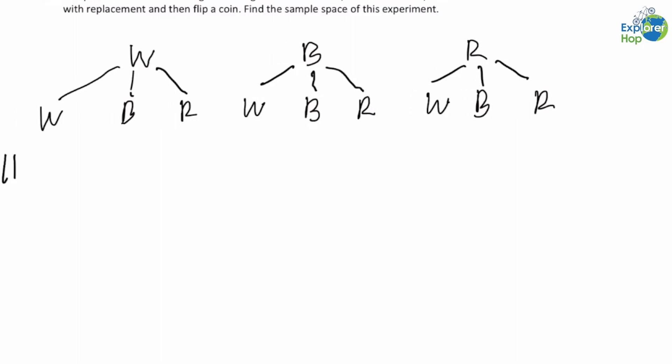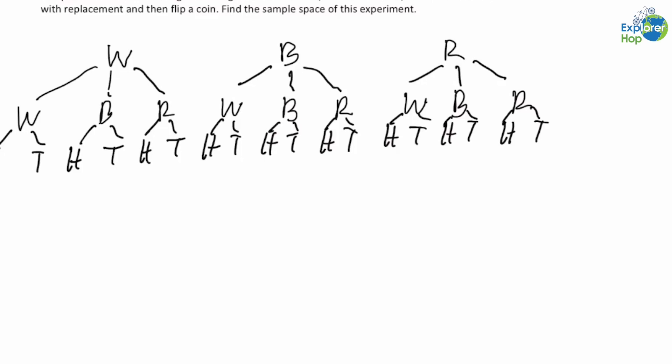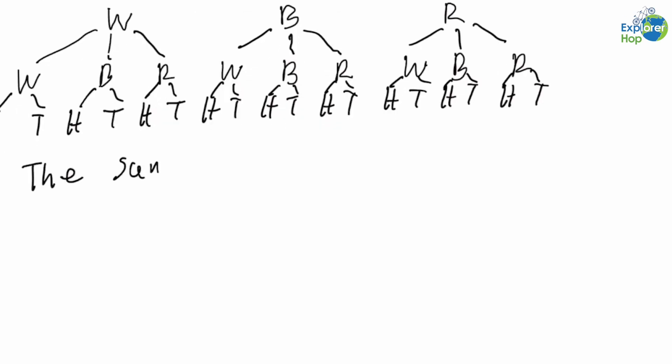When we flip a coin, we have only two possible outcomes, either heads or tails. So we will write H and T under each of the marbles that we wrote. Now we can list all the possible outcomes that are in the sample space. The sample space is therefore the set containing the outcomes: